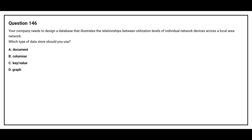Question number 146. Your company needs to design a database that illustrates the relationship between utilization levels of individual network devices across a local area network. Which type of data store should you use? Option A: Document. Option B: Columnar. Option C: Key-Value. Option D: Graph. The correct answer is Option D: Graph.